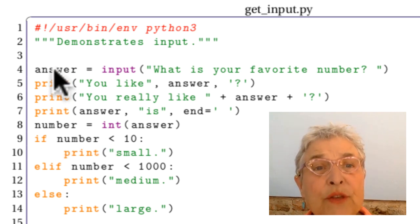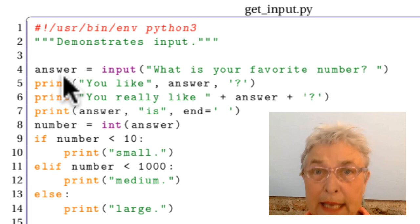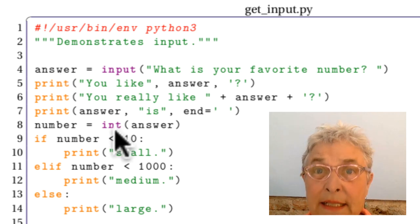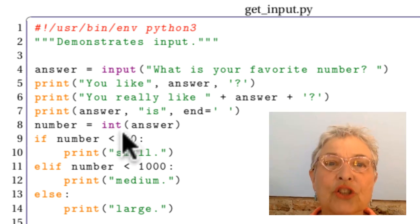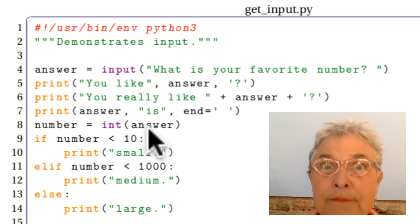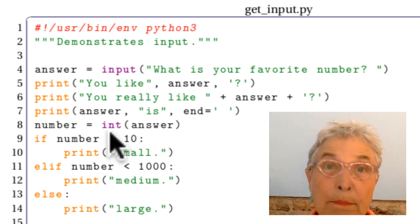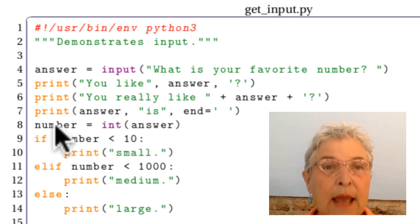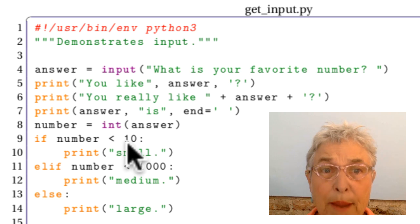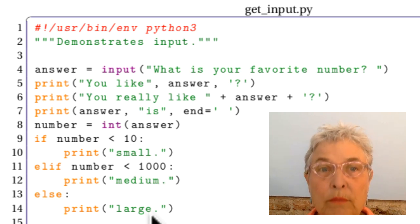That number, that answer that was given to us is a string, the data type string. And we want the data type int so that we can run this piece of code that we looked at before and do an evaluation of the number. So we're calling the built-in function int. Some people like to call it a factory function because it'll make an integer out of whatever you give it, if it can. Truthfully, it's a built-in class or a built-in data type. So we're going to make an integer of that eight, and now the number is the number eight, and we can compare it with the ten and the thousand and make this assessment.